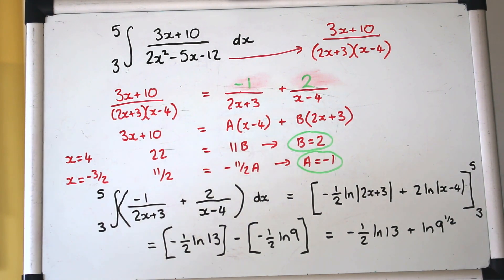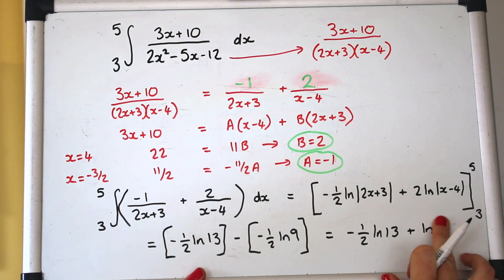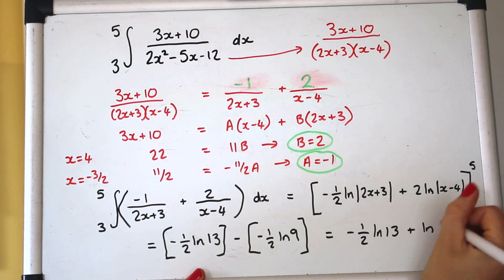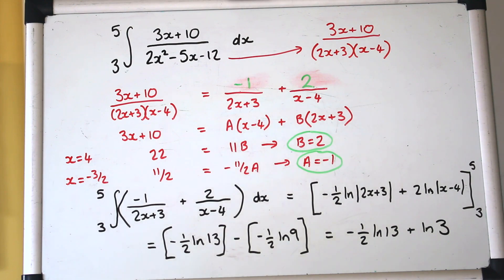And 9 to the power of a half is root 9 which is 3 so you can simplify that a little bit more. Great and we don't need a plus C because we put limits in and that is that.